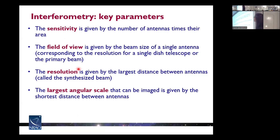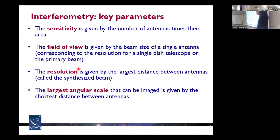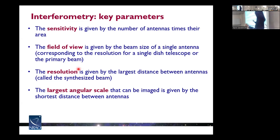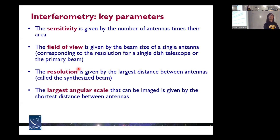Just a final recap of the key parameters in interferometry: the sensitivity of radio interferometry is determined by the number of antennas times their area — basically the total collecting area gives us the sensitivity, and ALMA is really good at that. The field of view is given by the beam size of a single antenna, determined by the wavelength and dish size. The resolution is given by the maximum baseline — the furthest distance two antennas are. And the largest angular scale is determined by the shortest distance between two antennas, because that gives us the low spatial frequency space that recovers the widest possible structure.